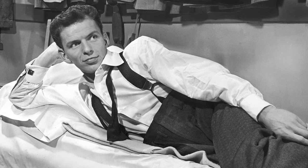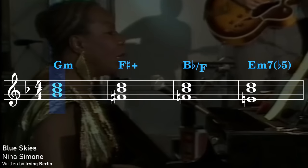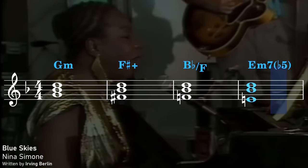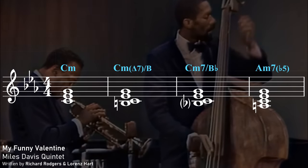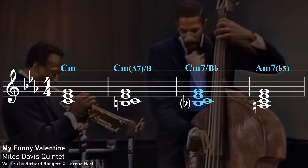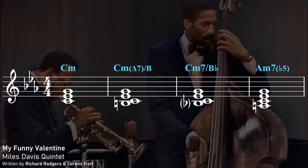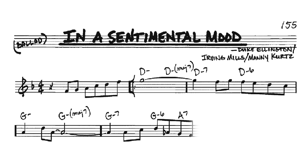We can't talk about line clichés without looking at some old American Songbook classics — the jazz and swing songs that the likes of Frank Sinatra and Ella Fitzgerald would have sung. Line clichés effectively became cliché during this era. The show tunes and jazz standards of the 30s, 40s, and 50s often featured this chord progression where a voice moves in semitones against a static chord. A great example is "My Funny Valentine," written by Rodgers and Hart in 1937. In 1935, Duke Ellington wrote "In a Sentimental Mood," which features two different line clichés back to back — one built on the tonic chord D minor, immediately echoed by another starting on the subdominant G minor.